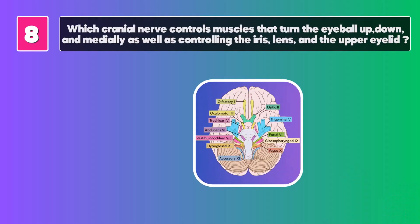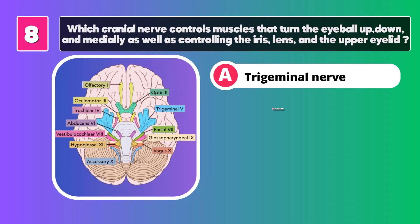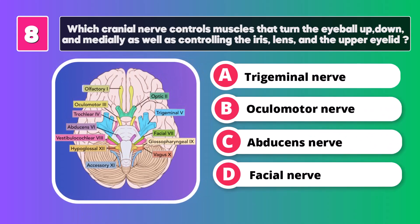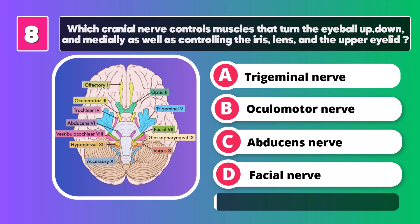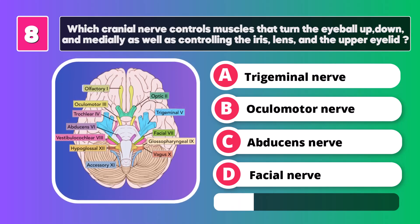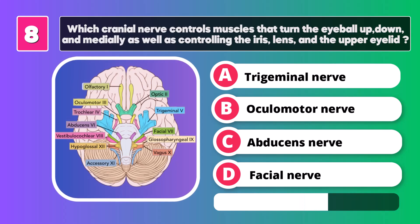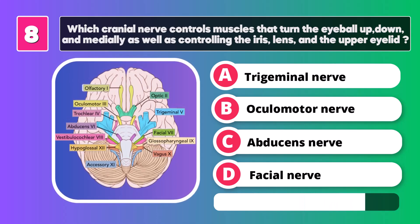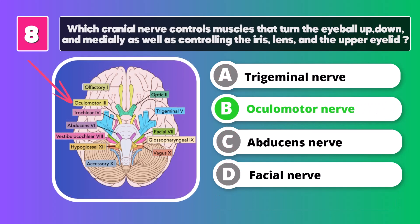Which cranial nerve controls muscles that turn the eyeball up, down, and medially, as well as controlling the iris, lens, and upper eyelid? Oculomotor nerve.